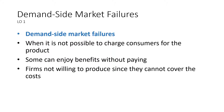Let's start with the demand side. Demand-side market failures occur because it may be impossible to charge all consumers for a product. Some may be able to enjoy benefits without actually paying, and the example given in the book is a fireworks display. There's no way to prevent people who didn't pay from watching them, and because of that, firms may not be willing to produce the fireworks since they cannot cover the costs.